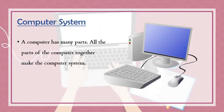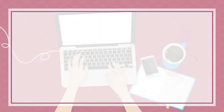What is a computer system? A computer has many parts. All the parts of the computer together make the computer system. As you see in your picture, the computer system includes all the essential parts of a computer — that is monitor, keyboard, mouse, and CPU.